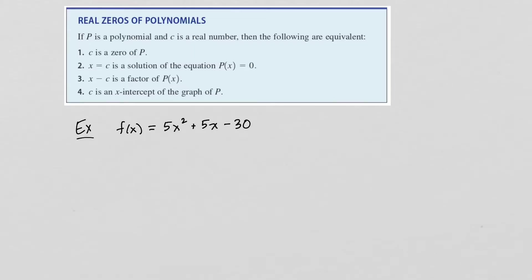When graphing polynomial functions, it's important to discuss the real zeros. If p is a polynomial and c is a real number, the following are equivalent: c is a zero of the polynomial; x = c is a solution of p(x) = 0; x − c is a factor of the polynomial; and — most important for graphing — c is an x-intercept of the graph of p.